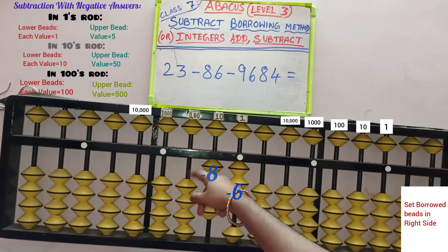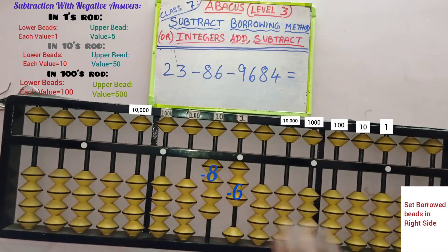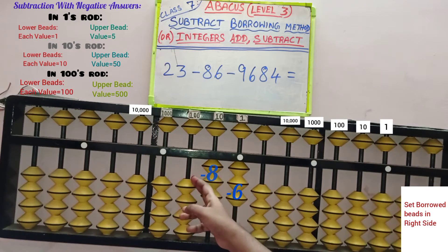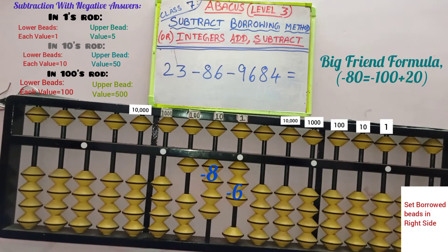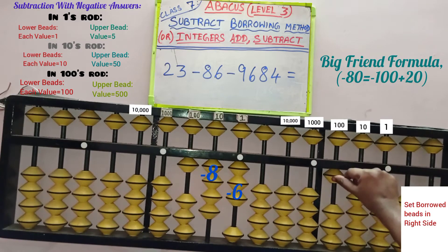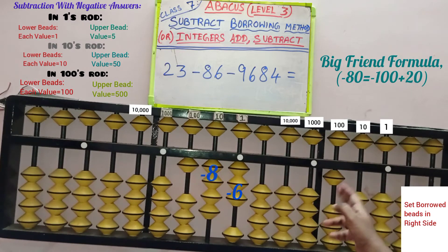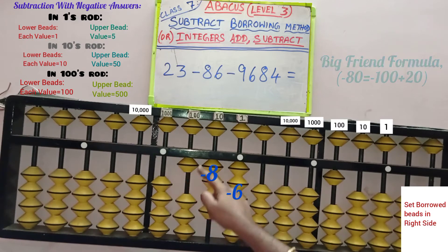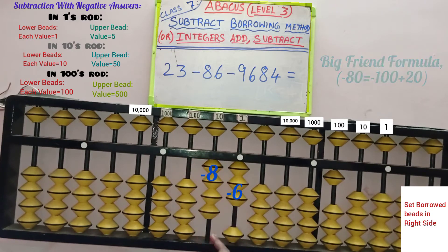That is in the 100's row we should remove 1 bead, but no beads are there to remove. Hence we should borrow 1 bead from the 100's row. Set this borrowed bead in the right side part in the same 100's row. So 2 is added here and remove the beads from the 100's row. So minus 100 plus 20 equals minus 80 — completed. We have borrowed 100 beats for applying the formula.